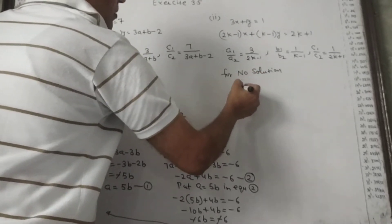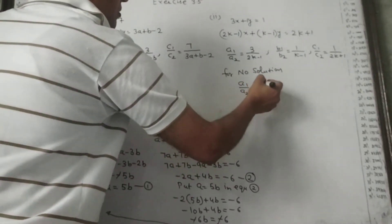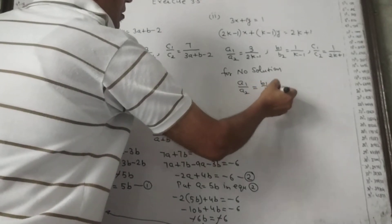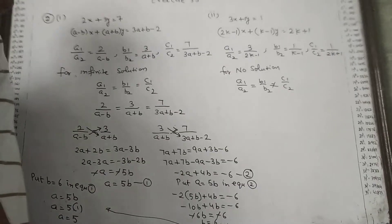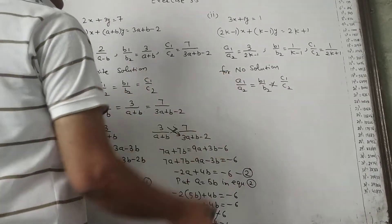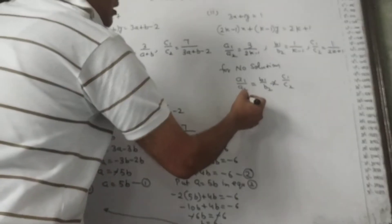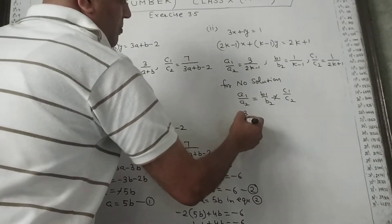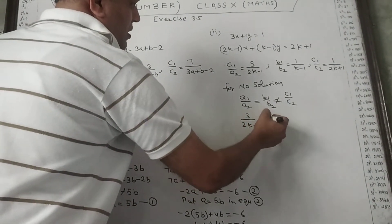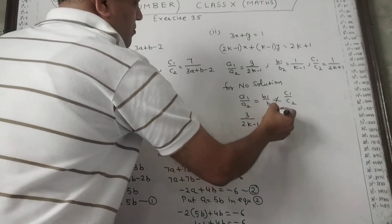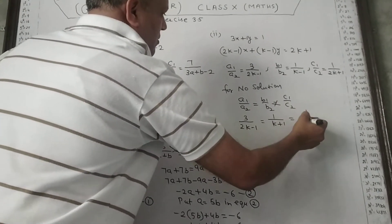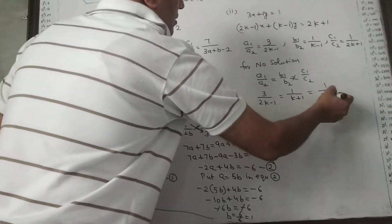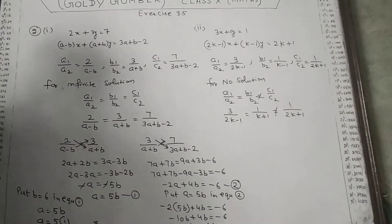The no solution condition is a1 upon a2 equal to b1 upon b2, but not equal to c1 upon c2. So we have 3 upon (2k minus 1) equal to 1 upon (k minus 1), not equal to 1 upon (2k plus 1).